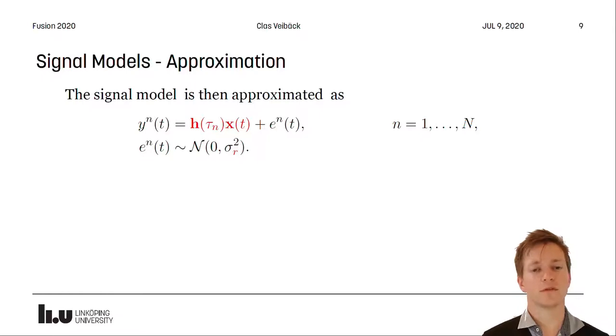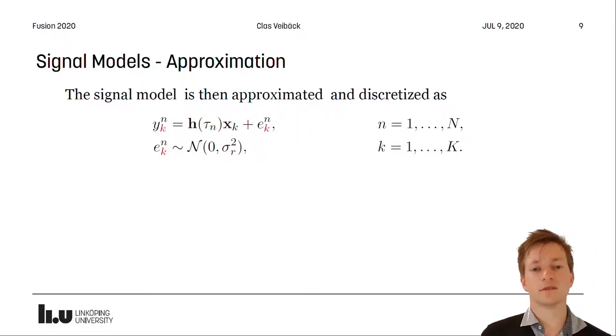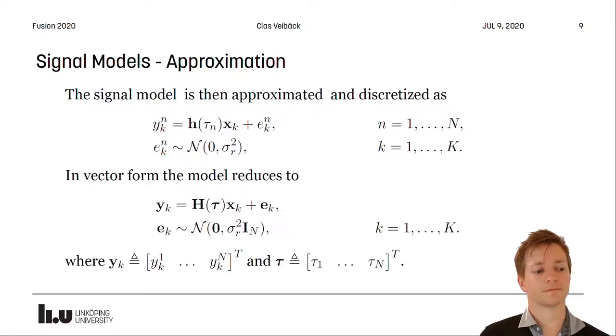Moving back to the signal model that we use, we can replace the true signal with approximation and we also add a bit of noise to the measurement to account for the neglected terms in the approximation. We also discretize this in the following and using this we can vectorize the entire model into the following form where H is just all the lowercase h's stacked.